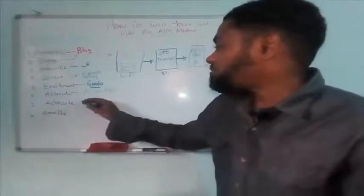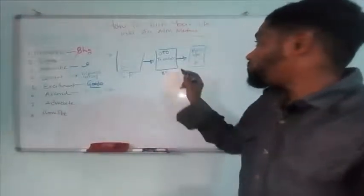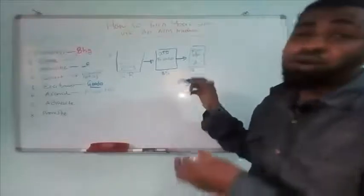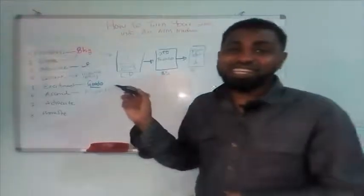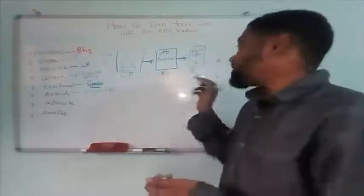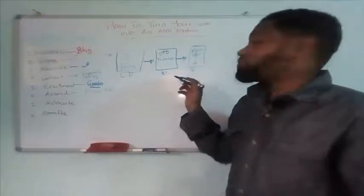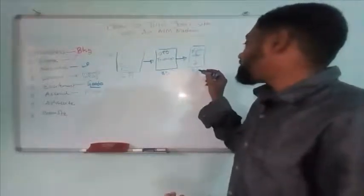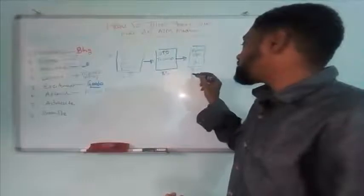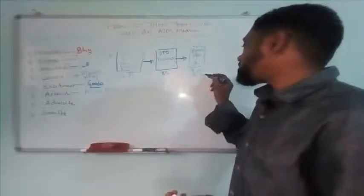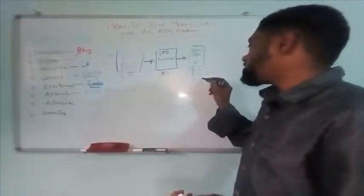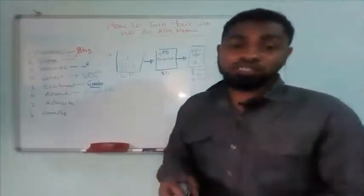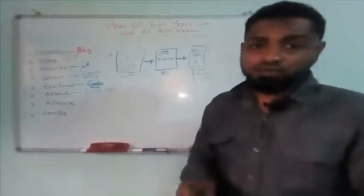Now what happens next? If you've delivered well on the main offer — it could be a $100 product, a $500 product, a $1,000 product, depending on your products and services — when they like this and you have proved you're good at what you do and you've delivered the service, now they become your advocate.